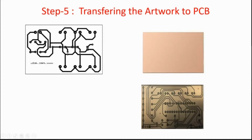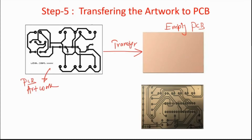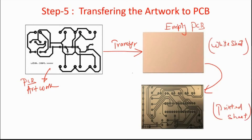The PCB fabrication process starts with taking an empty PCB. The very first thing is to transfer the artwork to this empty PCB — the black-colored tracks from the PCB artwork are printed onto it. Think of the empty PCB as a plain white sheet and the artwork as the printed sheet. There are three standard methods for this transfer.